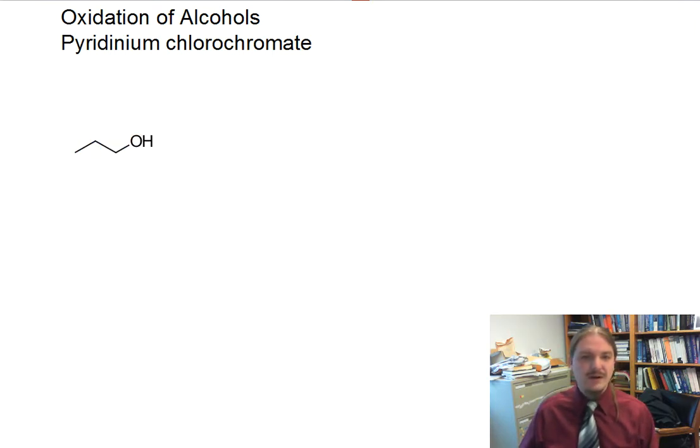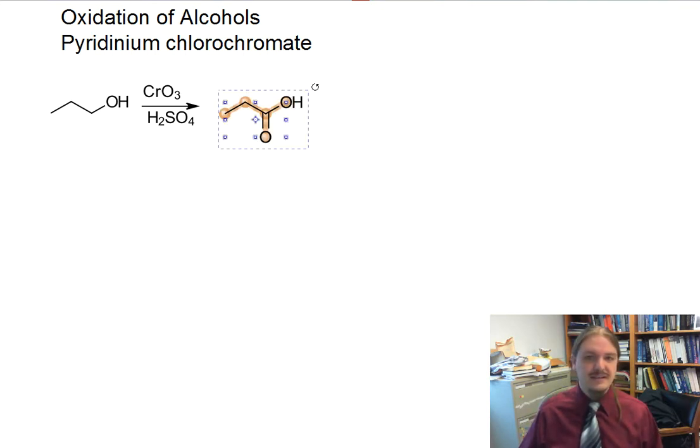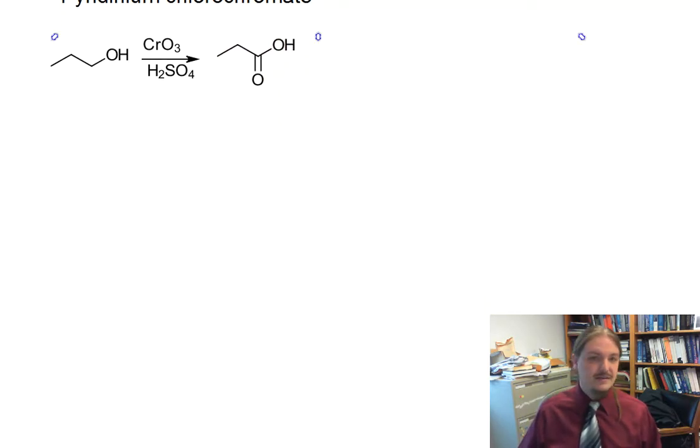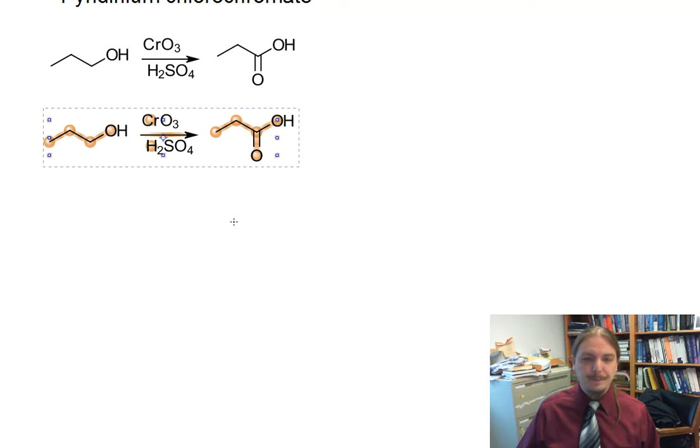So, if I have a primary alcohol, if you've watched my video on the chromic acid oxidation, then you know that primary alcohols can be over-oxidized in some oxidizing conditions to carboxylic acids, and they go through the aldehyde as an intermediate. But what if you wanted that aldehyde instead of the carboxylic acid?